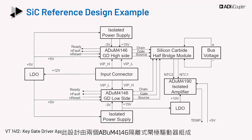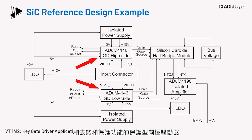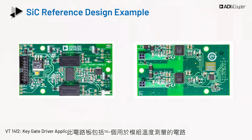This design consists of two ADUM4146 isolated gate drivers to drive each of the switches in the modules. The ADUM4146 is a protecting gate driver with bipolar supply, Miller clamp, and desaturation protection. The secondary side is powered with an isolated supply with plus 15V and minus 3V rails. The board also has a circuit for temperature measurement of the module along with some additional linear regulators and other supplementary components.